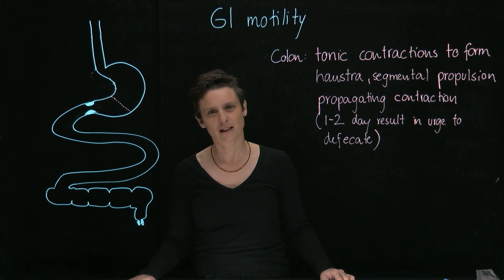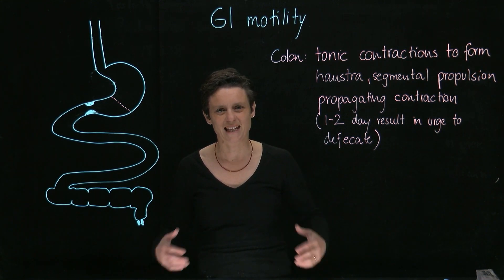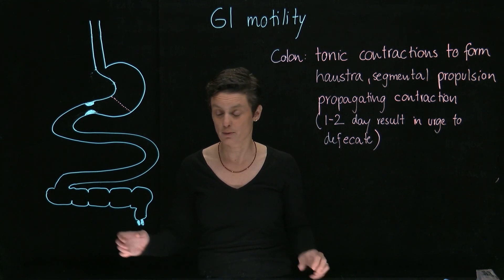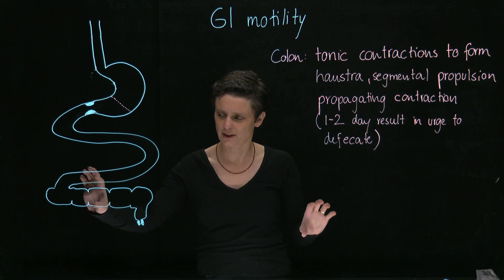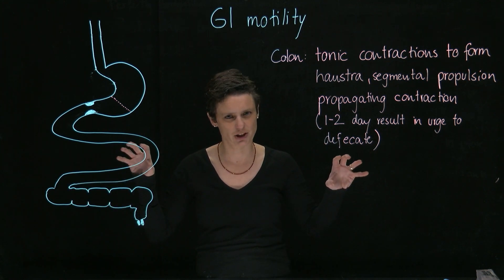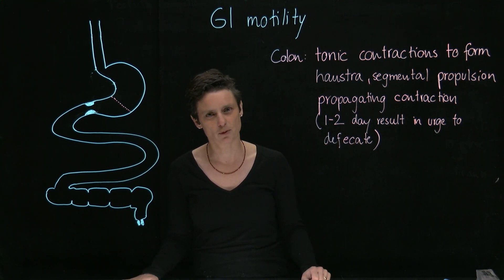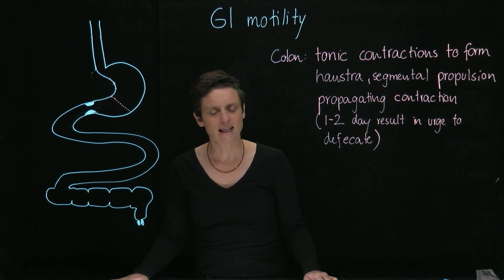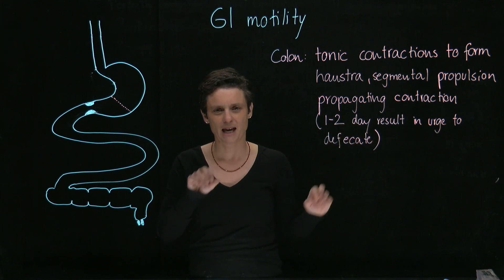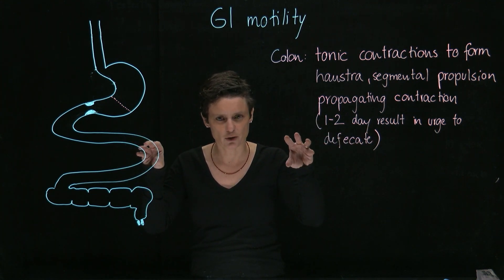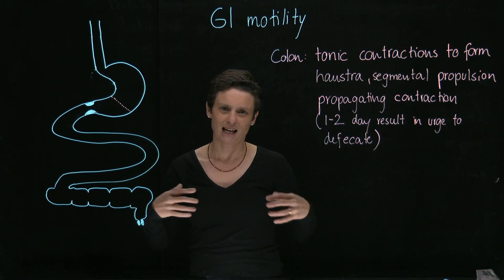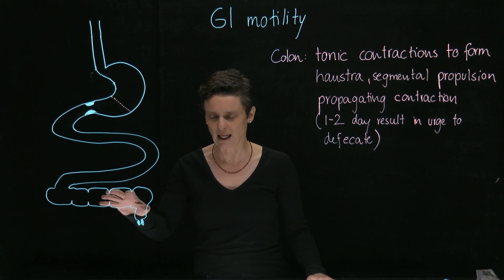Next we have the colon. The colon is here to dry out the bolus and then expel the waste, so we also want the contents sitting for a while to absorb all the water. The colon has steady contractions all the time that form the haustra. These contractions act like a little washing machine to absorb all the water and dry out the bolus. There are also segmental propulsions — contractions from time to time, contracting at one spot then at a different spot then back to the same spot — which leads to really drying out all the contents.